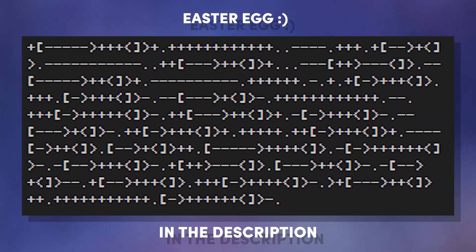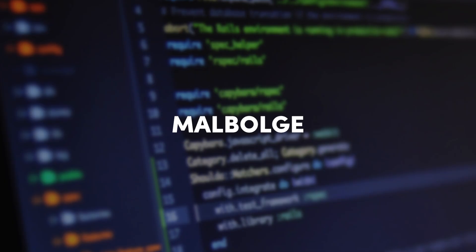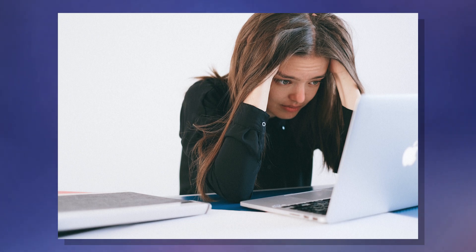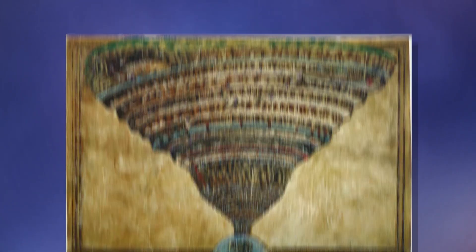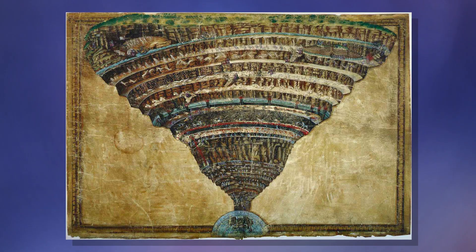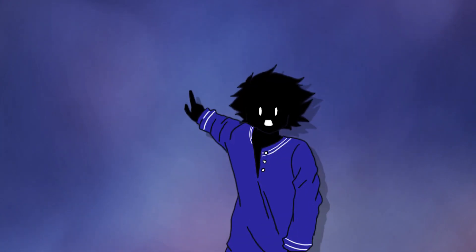I'll give a cookie to anyone in the comments who can translate this block of code. Malbolge, referred to as the most difficult programming language known to man, named after the eighth circle of hell, is one of the most difficult programming languages for a few reasons.